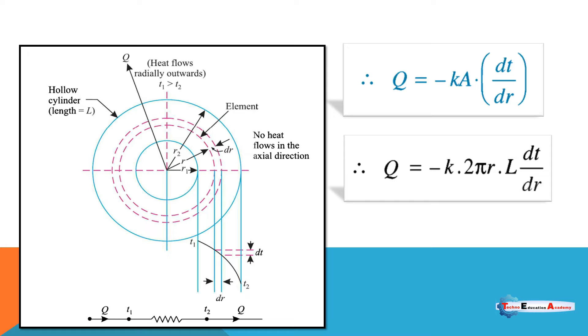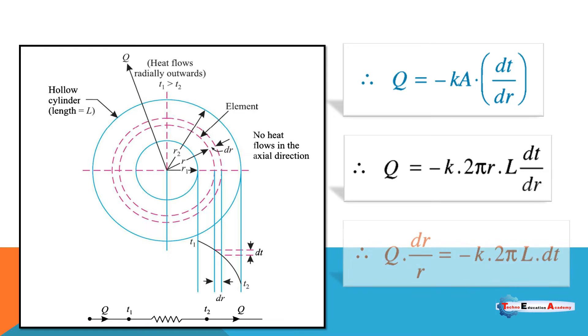Here we will put the value of area. We have already discussed the area of the cylinder is 2πrl. The remaining term remains as is, and then we cross-multiply the terms.